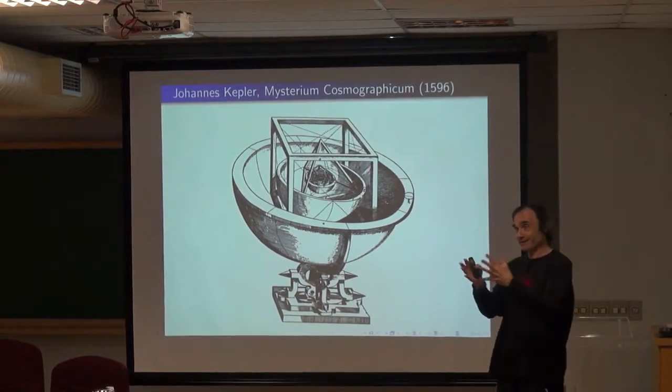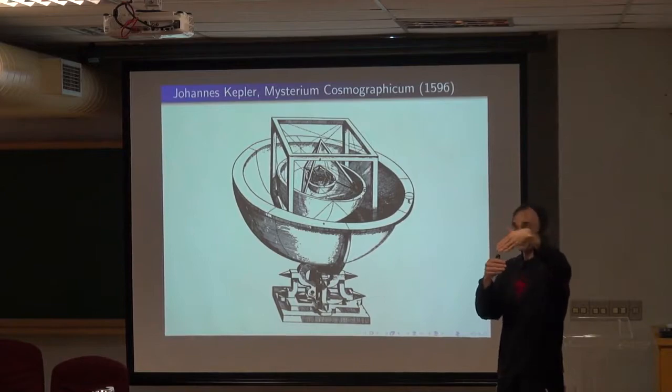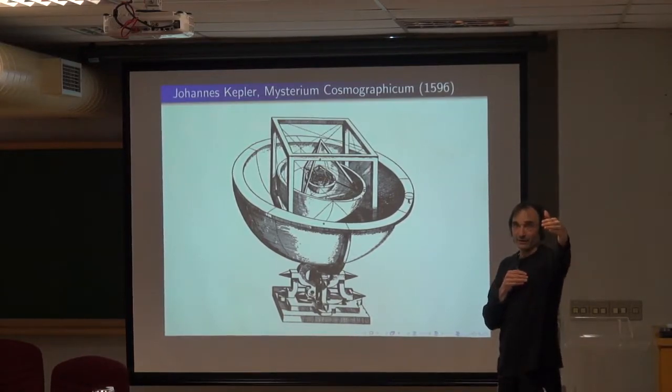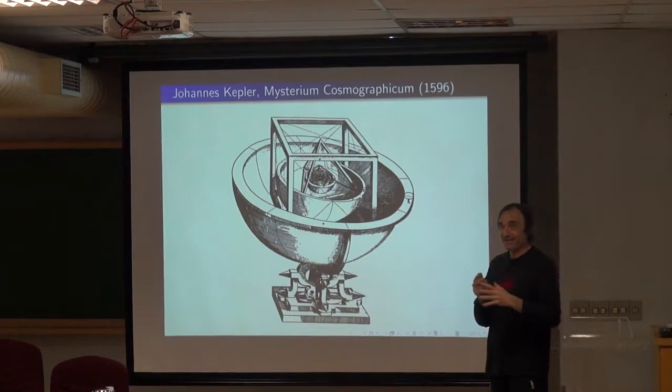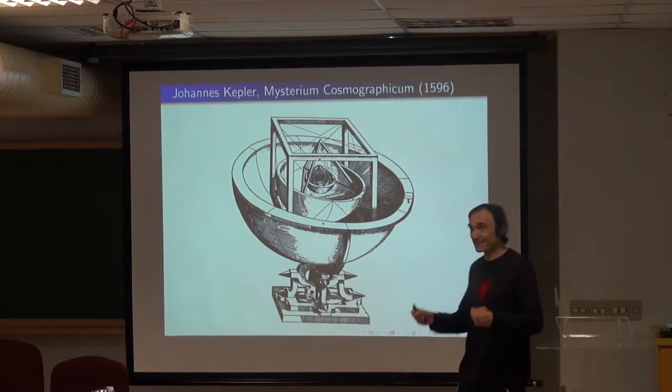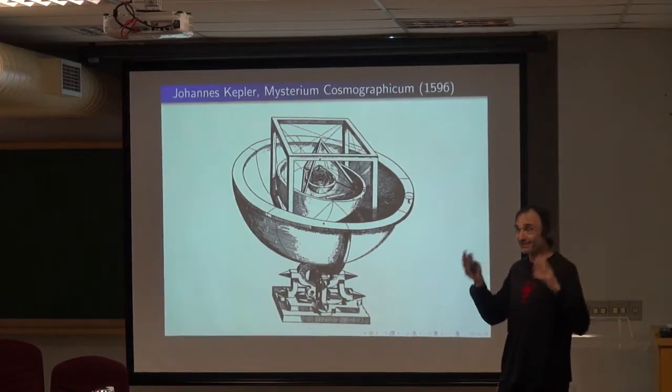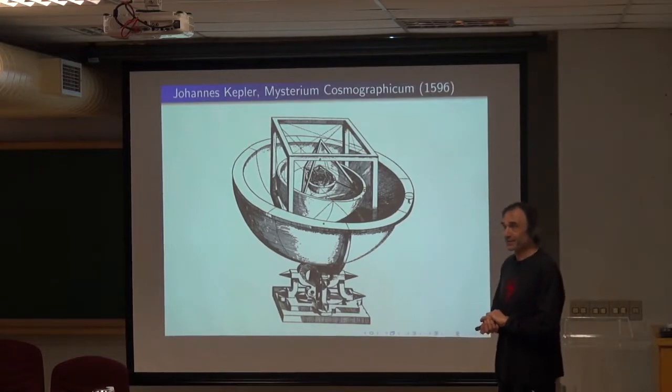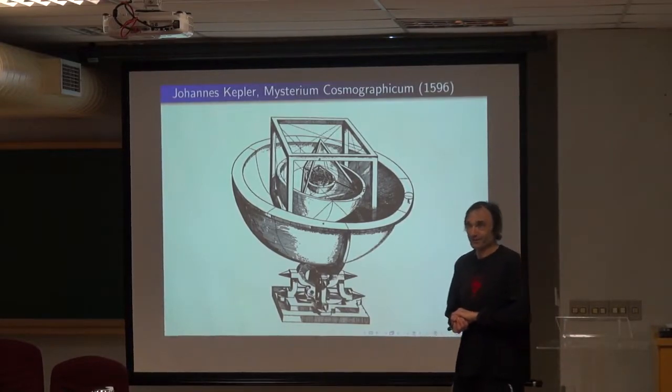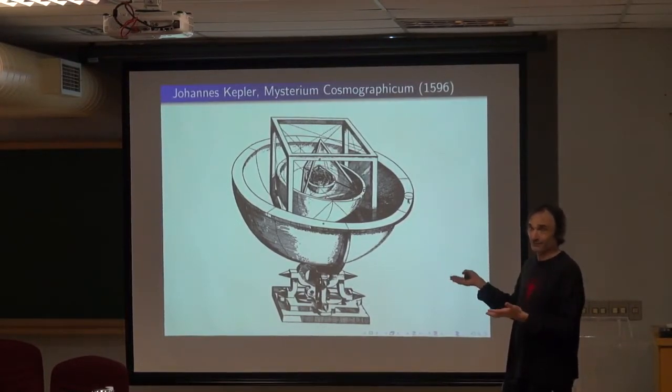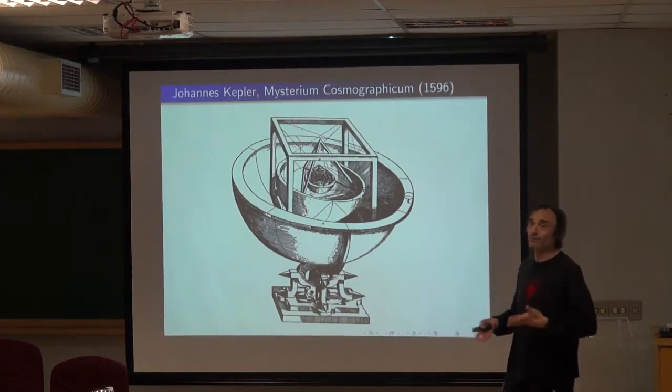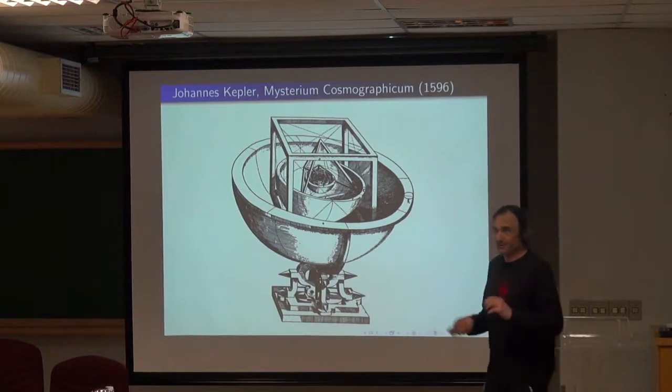He had a beautiful idea how the arrangement of the different planets in the solar system might be related to the five platonic solids. There were six planets at the time, and five platonic solids. Kepler had the idea of putting concentric spheres starting from the outside, then you put a cube inside the sphere, and then another sphere inside the cube, and so on. His hope was that by doing that, you will find certain ratios of distances of the different planets from the sun. And they match surprisingly well. So he built this model physically.